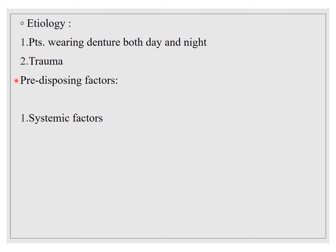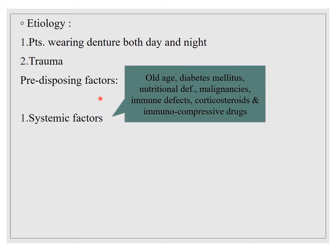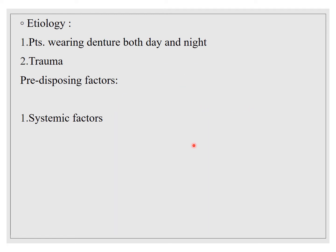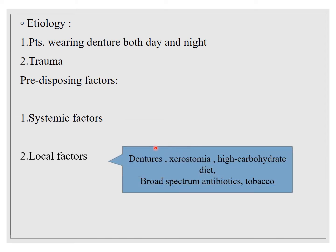The second etiologic factor is trauma. Systemic predisposing factors include old age, diabetes mellitus, nutritional deficiencies, malignancies, immune defects, corticosteroids, and immunosuppressive drugs. Local factors include xerostomia, ill-fitting or extended dentures, poor denture hygiene, high carbohydrate diet, and broad-spectrum antibiotics.